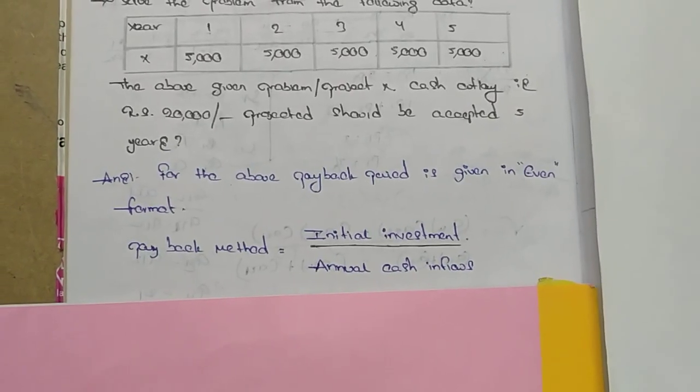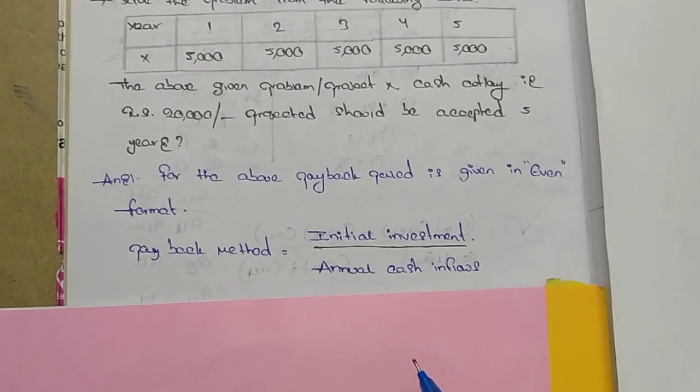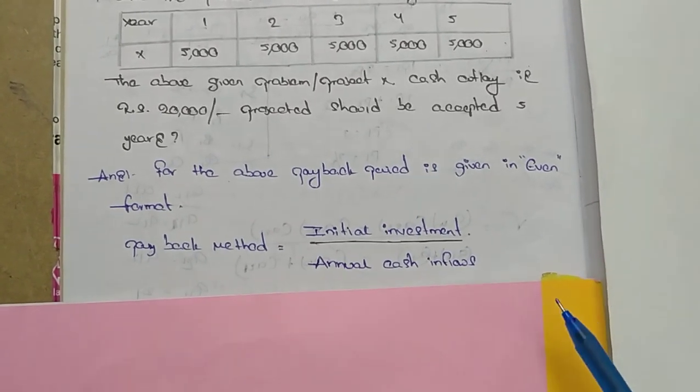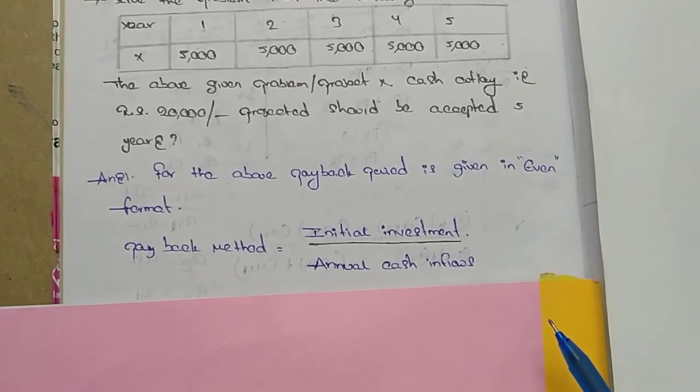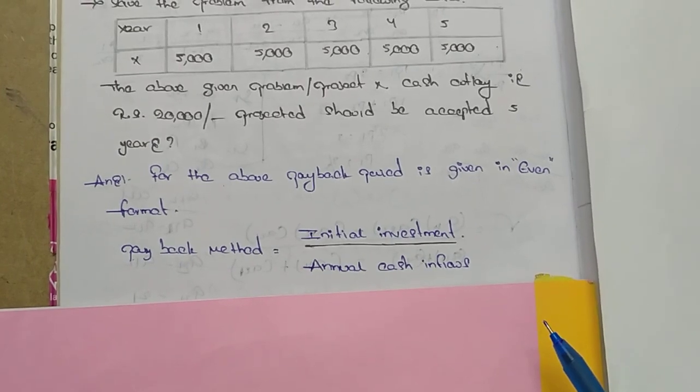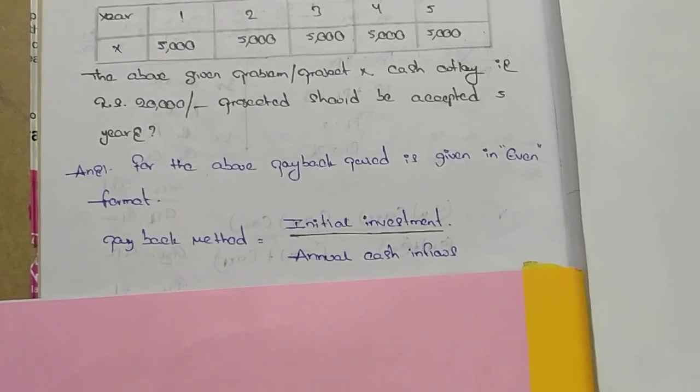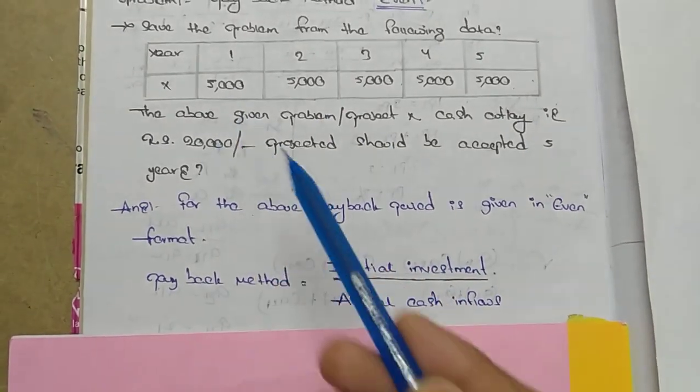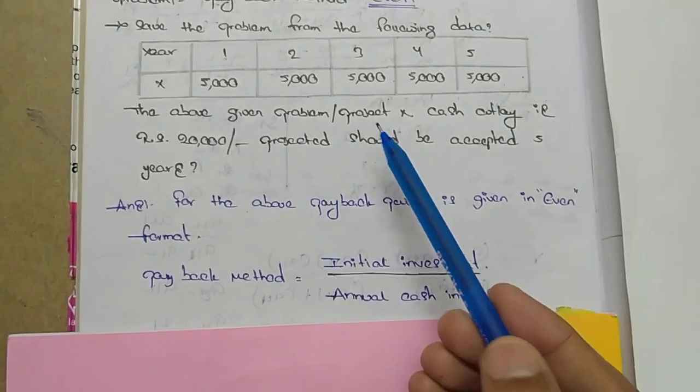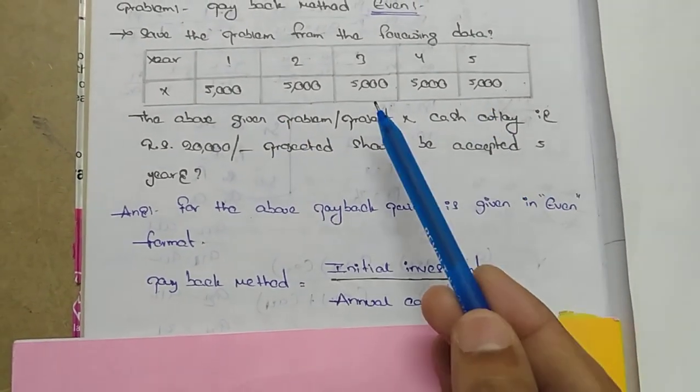Payback period method formula: Initial investment divided by annual cash inflow. Initial investment is 20,000. Cash inflow means every year the constant amount of 5000.